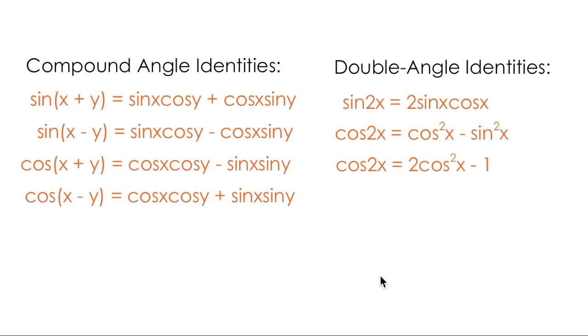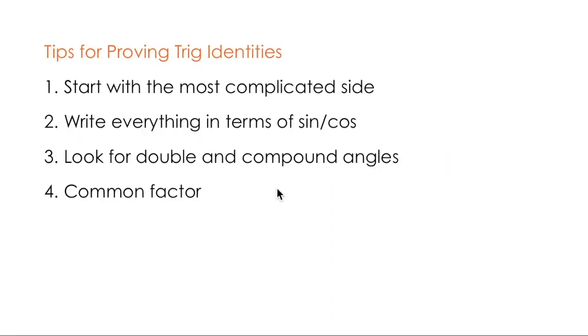The fourth thing I usually suggest is check for common factors. Most people find trig identities difficult because they struggle with common factoring without even realizing it.